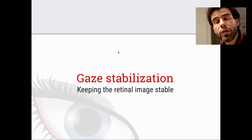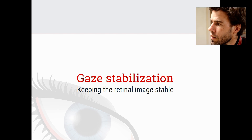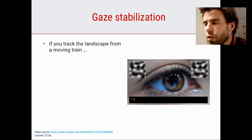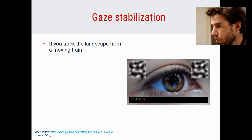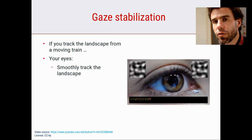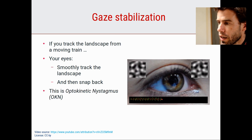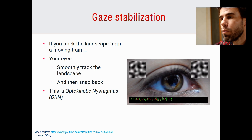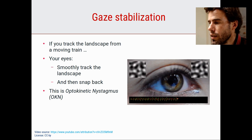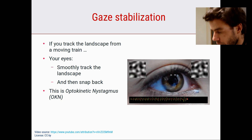Now let's look at gaze stabilization reflexes. Imagine you're in a moving train tracking the landscape - your eyes smoothly follow and then snap back. This creates a sawtooth-like velocity profile. This movement is called optokinetic nystagmus (OKN), and it's a gaze stabilization reflex - truly a reflex because it's impossible to suppress.